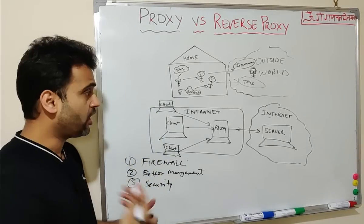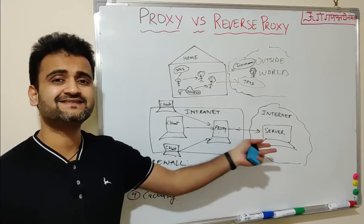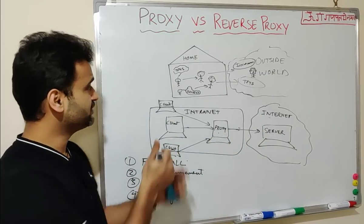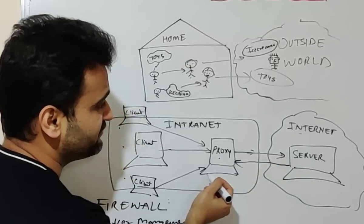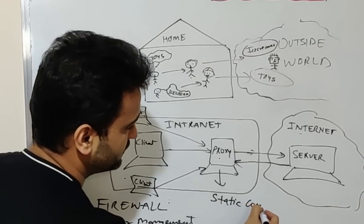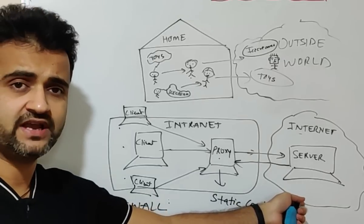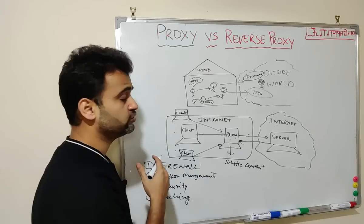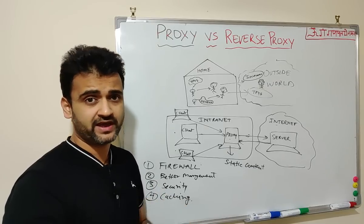Fourth point is performance. Proxy also helps with caching. Suppose you are accessing a web page over the internet and that page is a static page which multiple clients are requesting at the same time. Once that request has been fetched from the server, the proxy can store that static content. The next time any other client machine asks for the same content, the proxy server can fulfill that request directly from its own premises, saving bandwidth and giving very good performance.